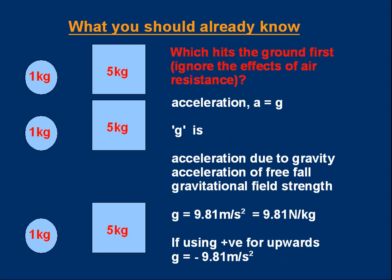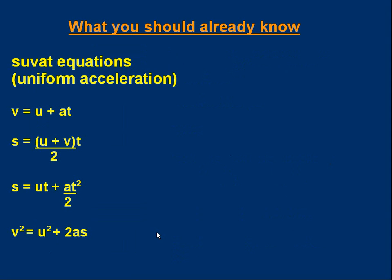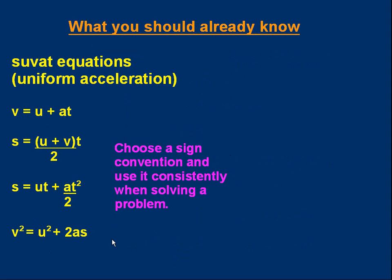What else should you already know? We should be familiar with using the Suvat equations — the equations of uniform acceleration. They're covered in separate lessons. Of course, if you use the Suvat equations, you must choose a sign convention and use it consistently. We often use positive up, negative down, but we don't have to have it that way around.